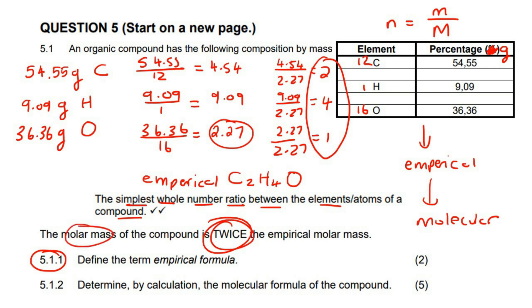But now they told us that the molar mass of the actual compound, which is the molecular, is twice the empirical. So you're going to double each of those. So the molecular answer is then going to be C4H8O2. You see how we multiplied each of those by 2? So C4H8O2.